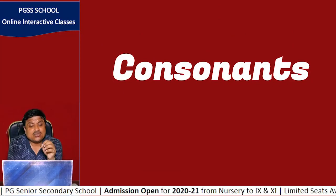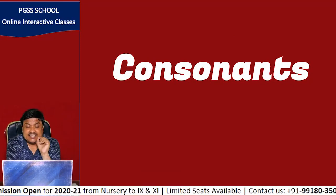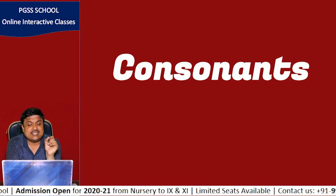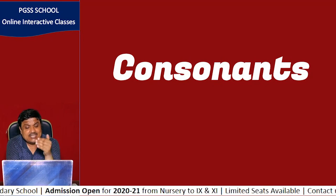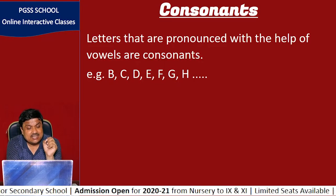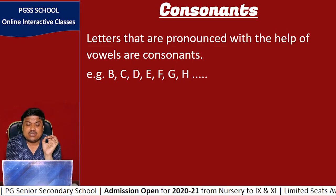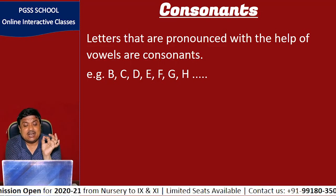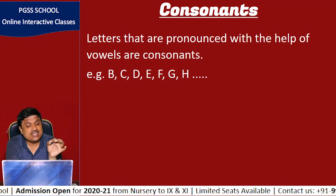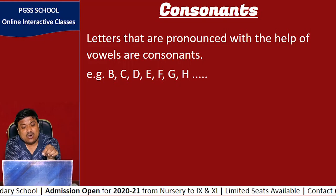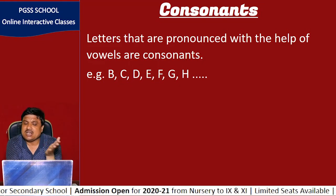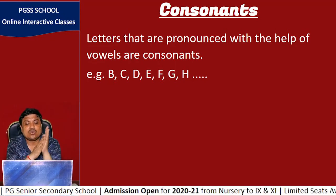As we know, there are 26 letters in the English alphabet. Five letters have been taken out as vowels, so we have 21 consonants. The definition of consonants: letters that are pronounced with the help of vowels are consonants. Those letters which can be pronounced only with the help of vowels are called consonants.